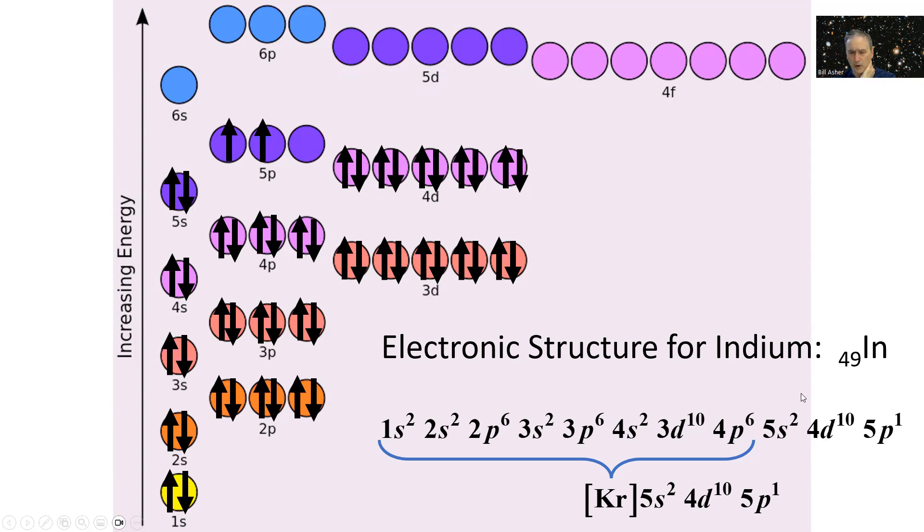So this is the electronic structure which I've written correctly here. Indium only has one p electron. Again, this part is the same electronic structure as krypton, so we'd write it as krypton 5s² 4d¹⁰ 5p¹. Because it's a completely filled d subshell, it doesn't count towards valence electrons, so indium would have three valence electrons, two in the s orbitals and one in the p orbital.